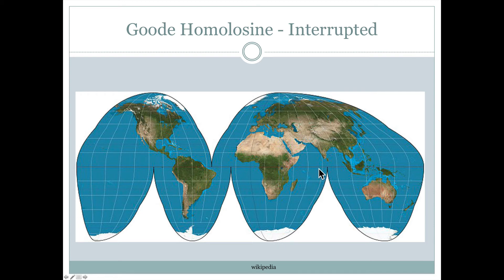The interruptions are occurring in the oceans — places people might not be focusing on, like in the middle of the Atlantic Ocean here. But all of the continental areas in this example are uninterrupted and easy to relate to each other, if we could draw one continuous path from one side of the map projection to the other.